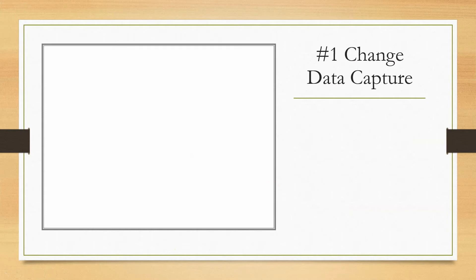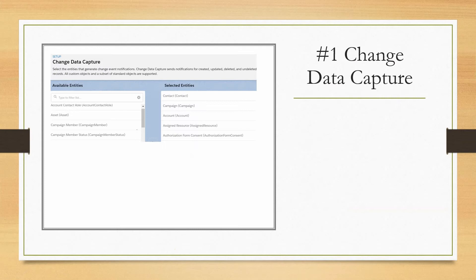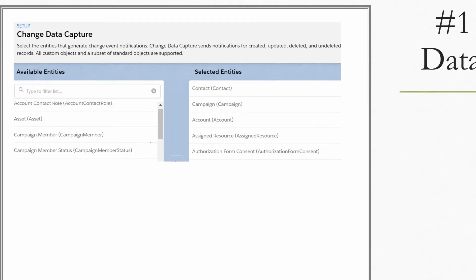The first standard platform event we are going to see is Change Data Capture. When you want to keep an external system in sync with Salesforce, you will be able to utilize this feature. To make use of it, you first need to enable the feature called Change Data Capture. This can be enabled from Setup, and in a developer edition you will be able to enable CDC for a maximum of five objects, but if you have an additional license you can enable it for additional objects. This is basically available for all custom objects and some standard objects also.